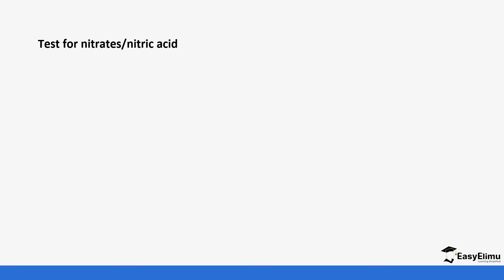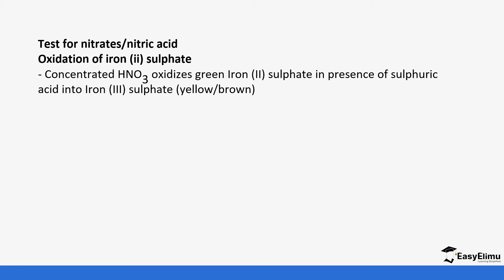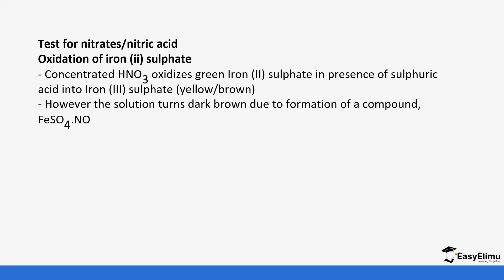The first test for nitrate or nitric acid is the oxidation of iron(II) sulfate. Saturated nitric acid oxidizes iron(II) sulfate to iron(III) sulfate, changing it from green to brown. The solution turns brown due to the formation of a complex because of the nitrogen(II) oxide (NO) that is produced. If NO reacts with iron(II) sulfate it forms a complex — this is the brown complex that we are going to see formed in the brown ring test.